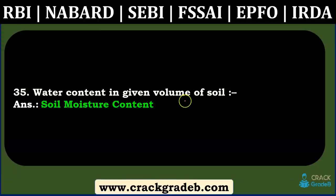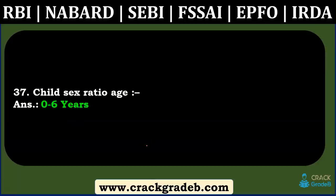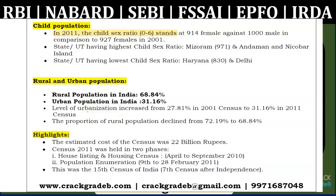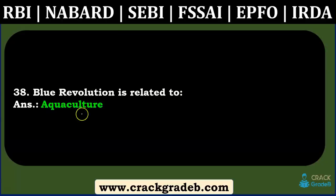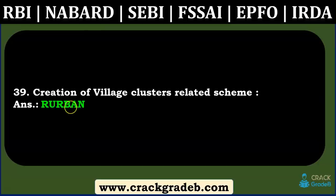Water content given in a given volume of soil — soil moisture content. First milk produced immediately following delivery of a newborn, rich in antibodies and nutrients — colostrum. This was not covered in our study material. Child sex ratio is for age 0 to 6 years, covered in the Social and Census chapter. Blue revolution is related to aquaculture, covered in the Fisheries static part.